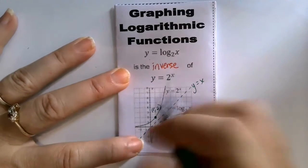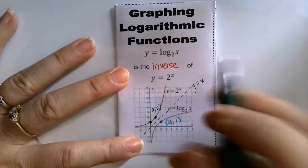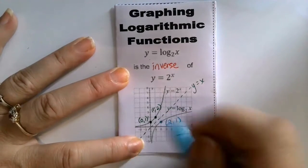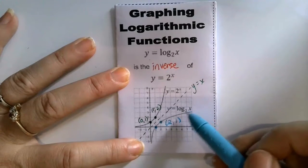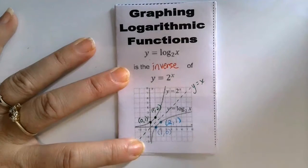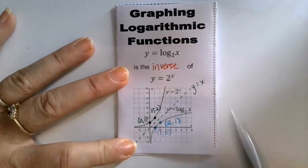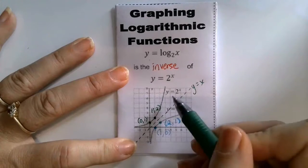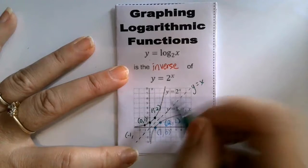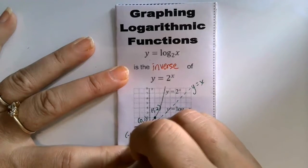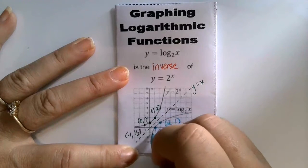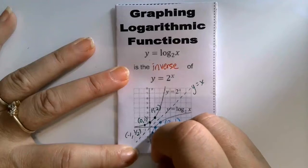Similarly, the exponential function has a y-intercept of (0, 1), so the corresponding point on log base 2 of x — since they're inverses — switches that x and y, giving us the point (1, 0). And our third anchor point on the graph of 2 to the x is (negative 1, 1/2) — the reciprocal of b where b is 2. When we reflect that anchor point, we get the point (1/2, negative 1).